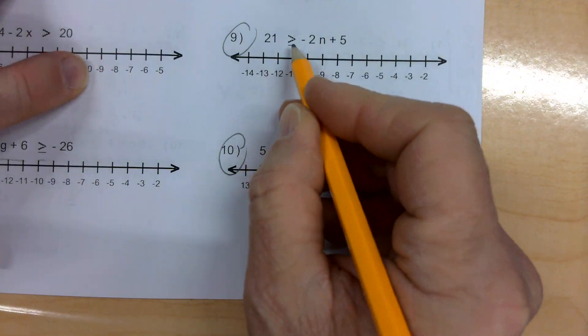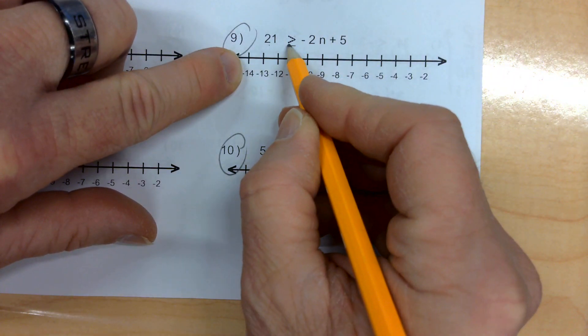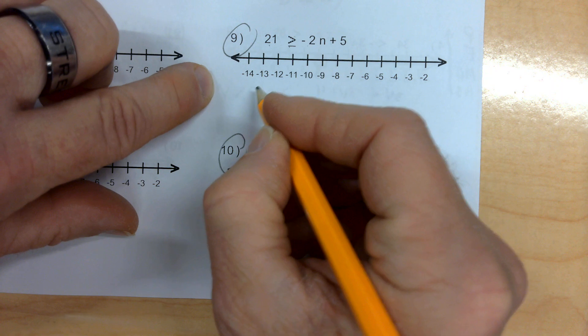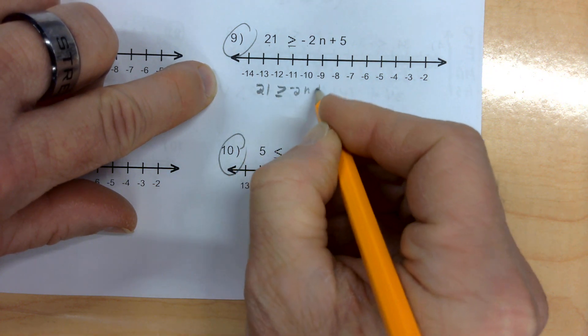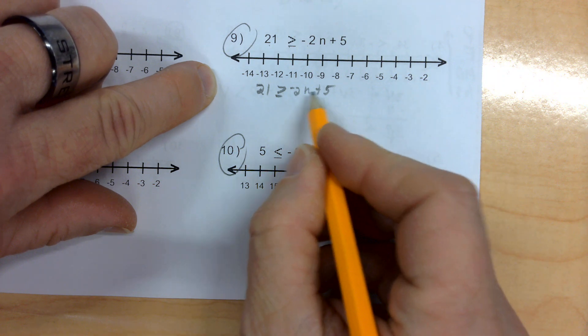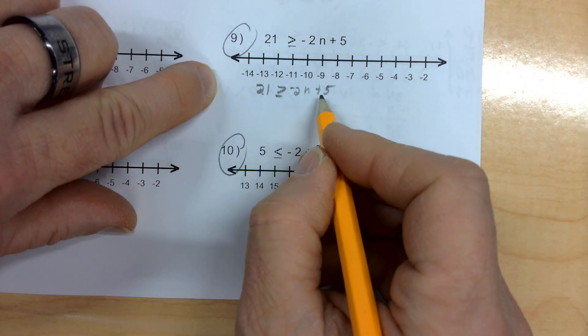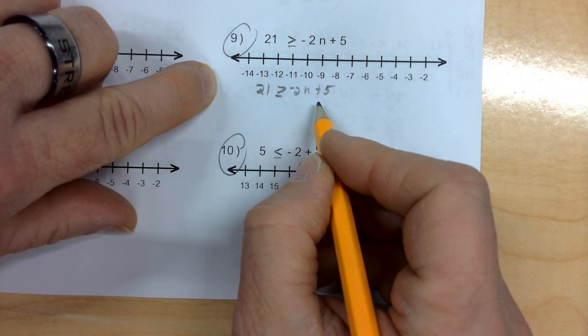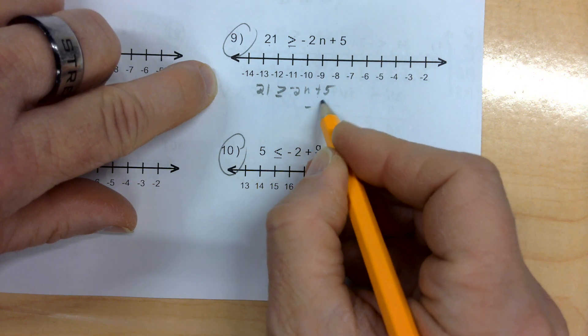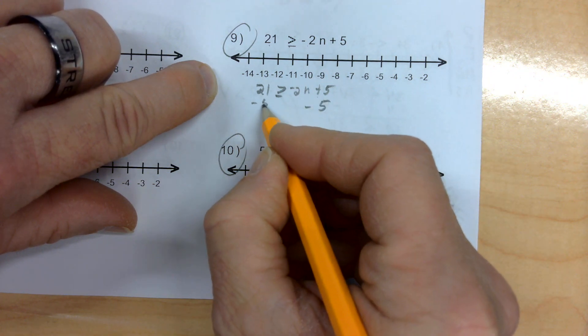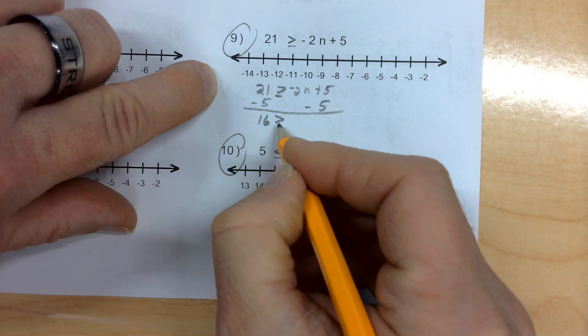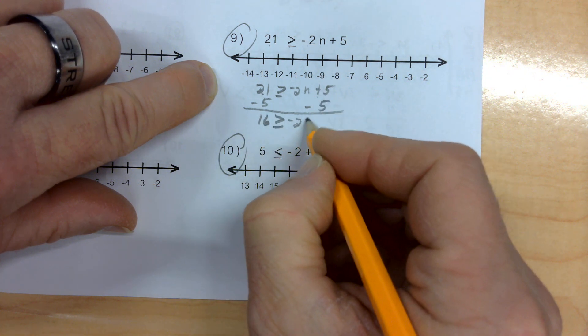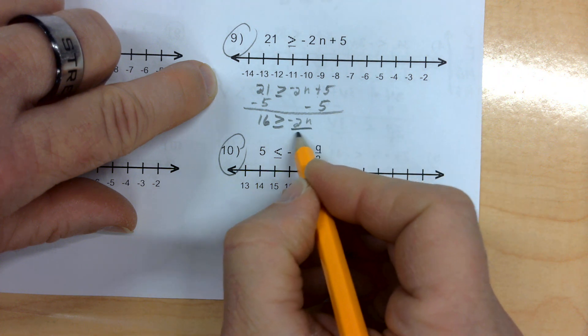We have 21 is greater than or equal to negative 2n plus 5. I'm going to rewrite the whole thing. Negative 2n plus 5. I have addition and multiplication. I'm going to undo the addition first because I undo PEMDAS in reverse. So, I subtract 5 from both sides. When I do that, I get 16 is greater than or equal to negative 2n. And I divide both sides by negative 2 now.